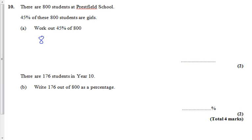So all you've got to do is take 800 multiplied by 0.45 in the calculator and it comes out with 360. So with the calculator, really straightforward.